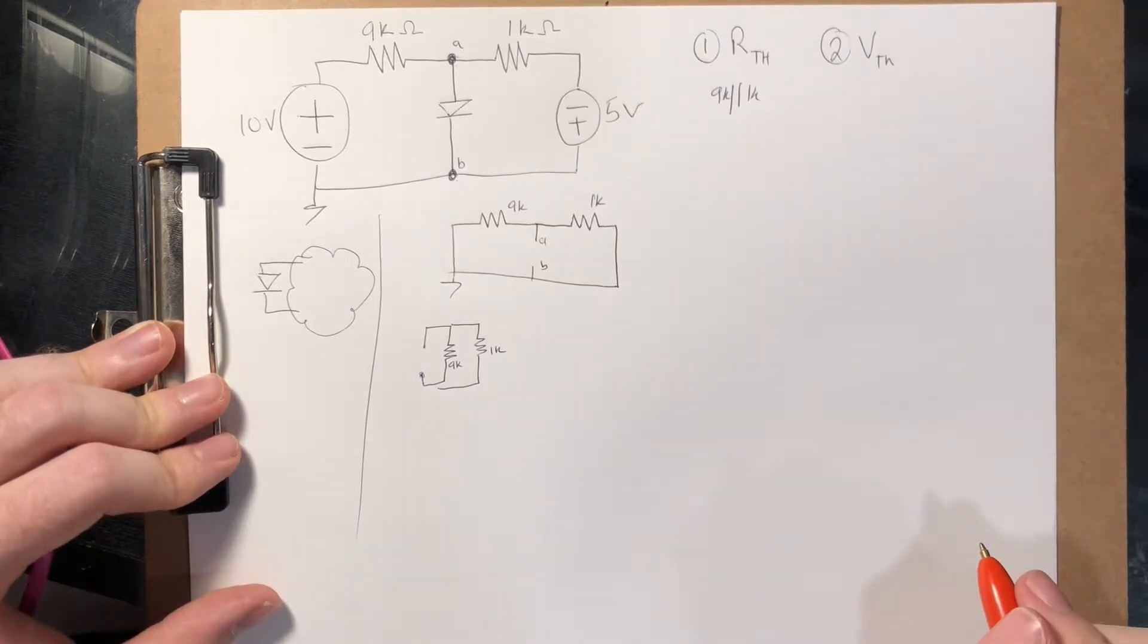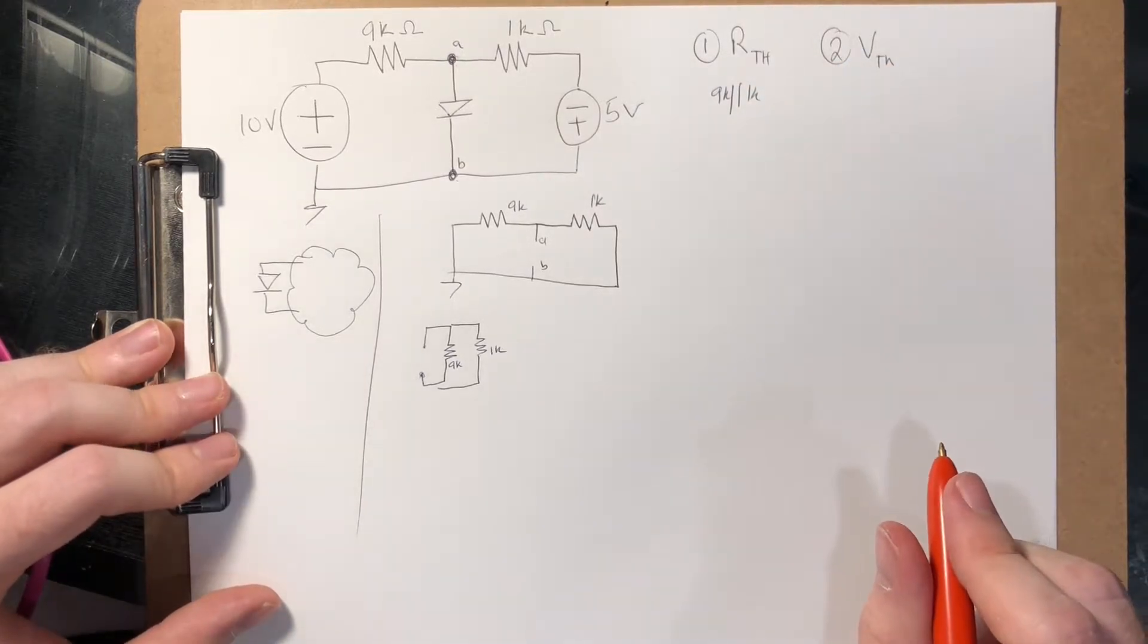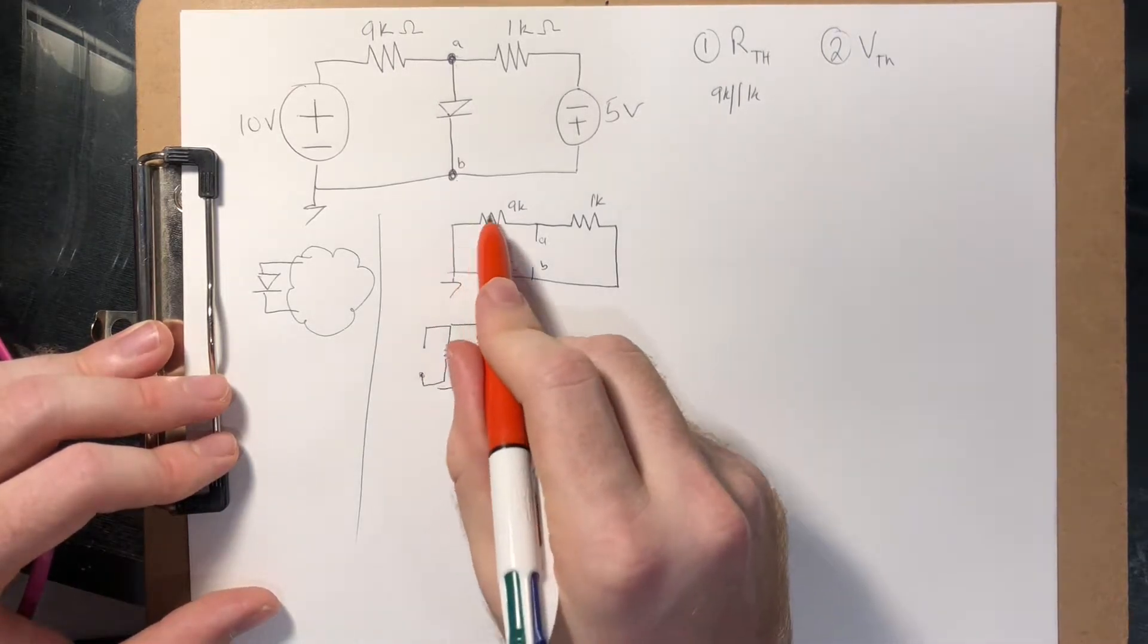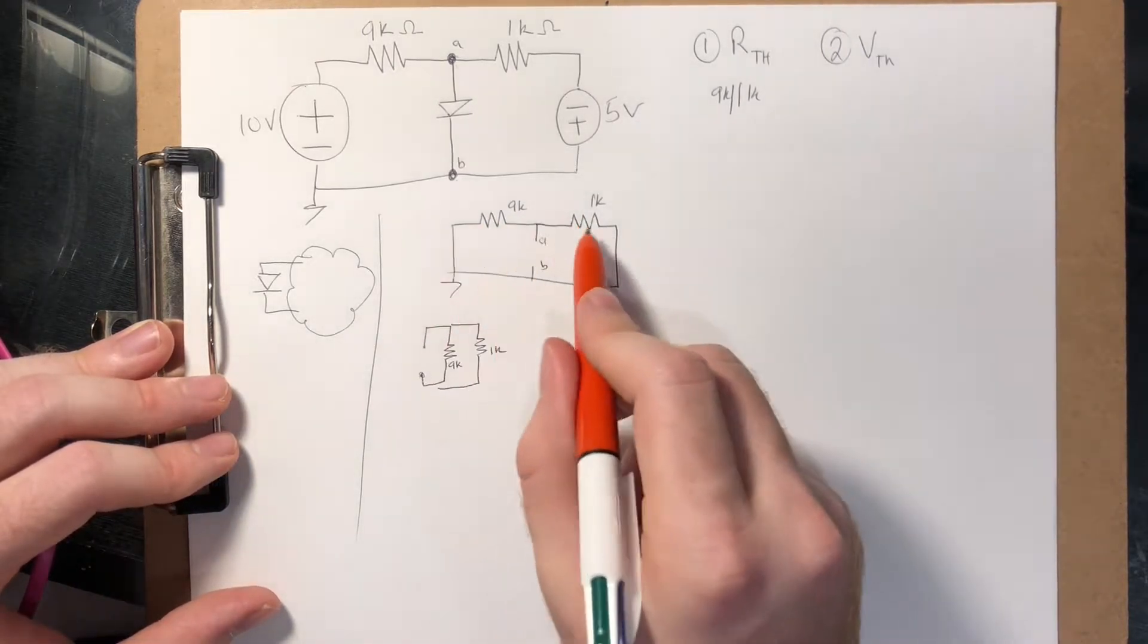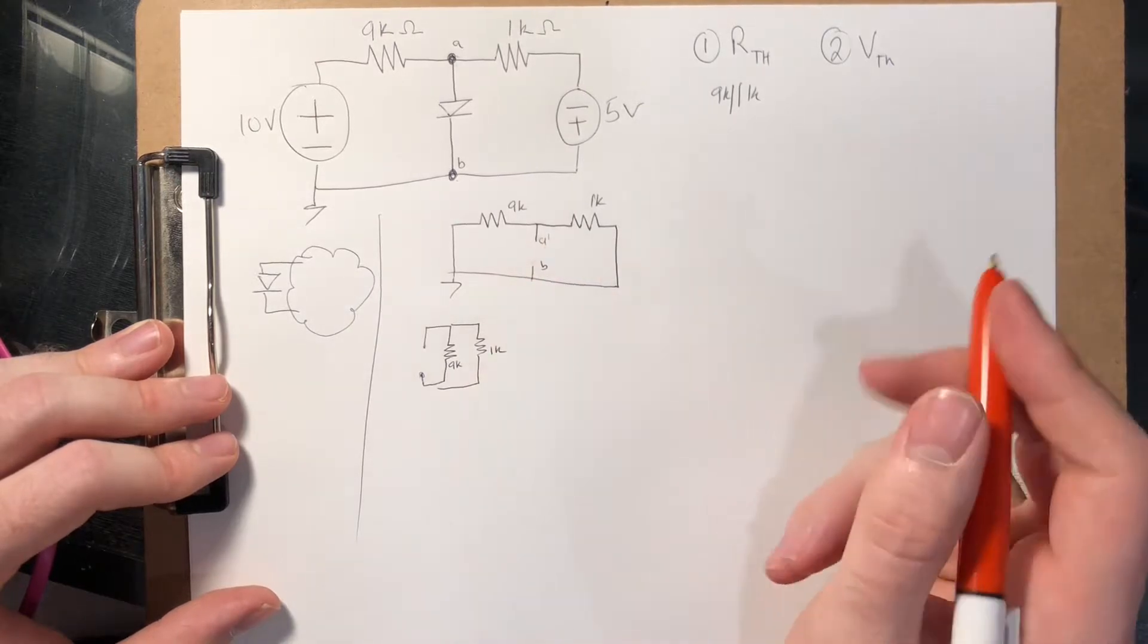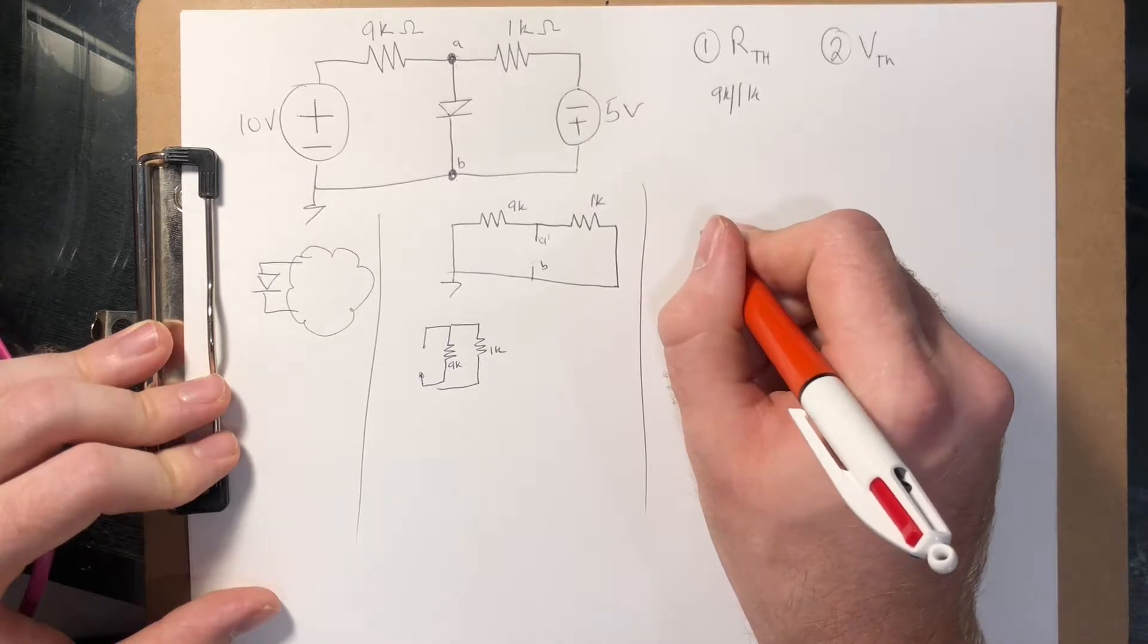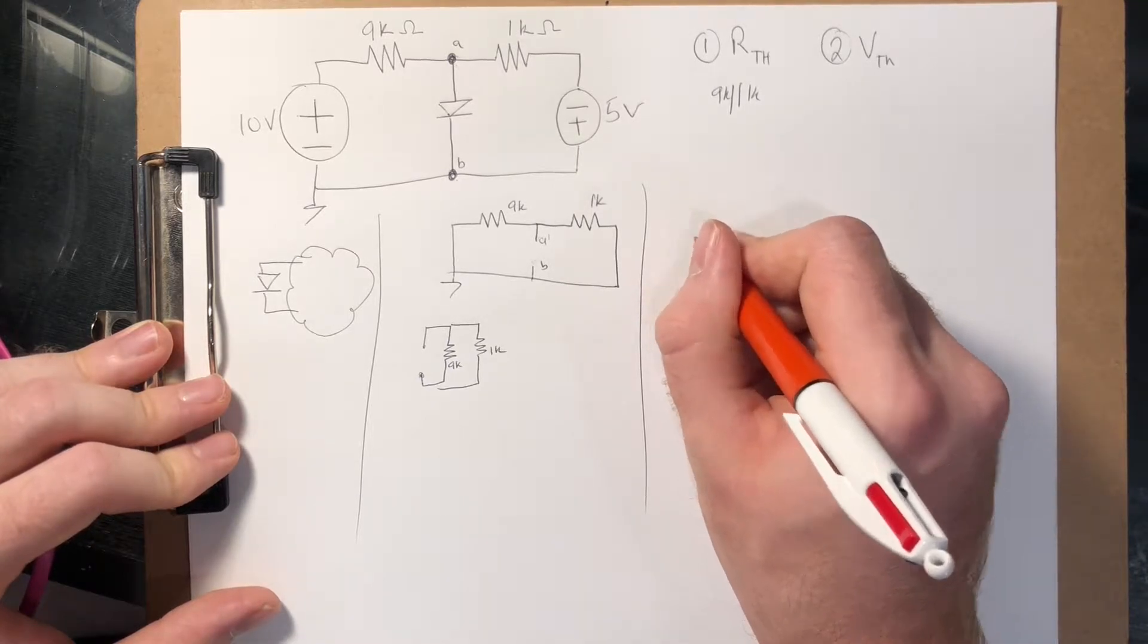And to find V Thevenin, what we do is we need to find the current normally without the diode connected here. So what we can do now is just use good old KVL.